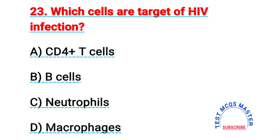Question number twenty-three: which cells are the target of HIV infection? The right answer is A, CD4+ T cells.